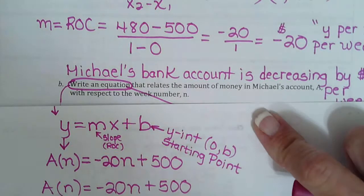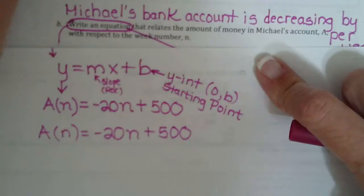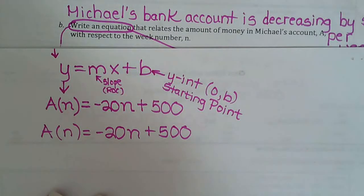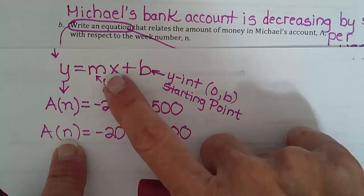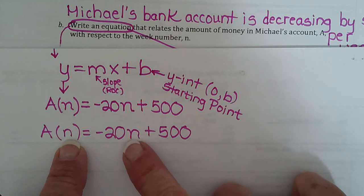So one thing I notice students do wrong on this is that they don't make these match. This is your x. So whatever is in place, so y equals mx, so in place of x I put the n so these two letters must always match. Whatever you're telling the reader is x must be the same letter that you use for x.